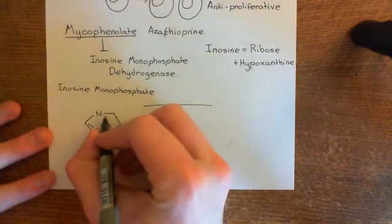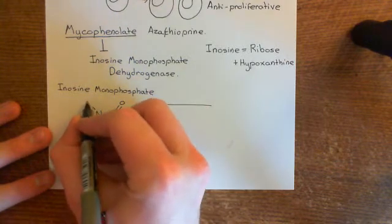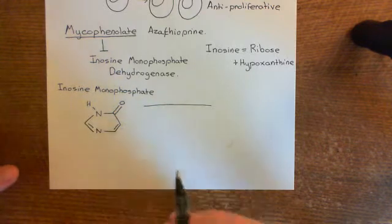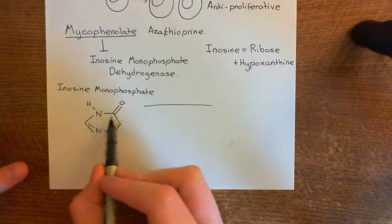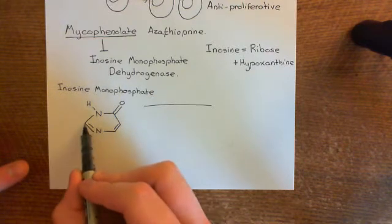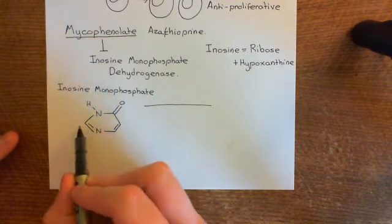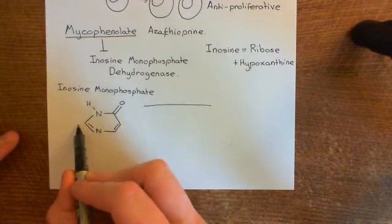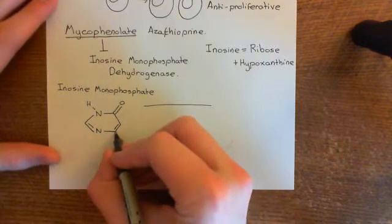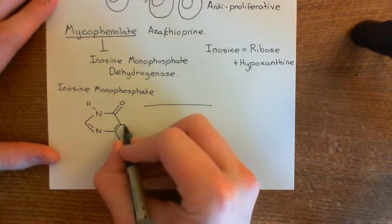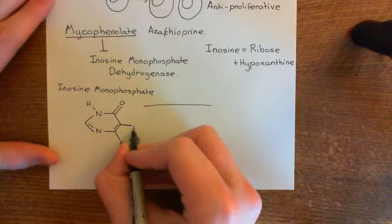We're drawing a skeletal structure here, so we don't show carbons — these corners are implicitly carbons. We also don't show hydrogens coming off carbons, so there would be a hydrogen coming off here but we don't show that. Then you've also got another ring coming off here, which is why those carbons don't have hydrogens shown. This is what's known as an imidazole ring.